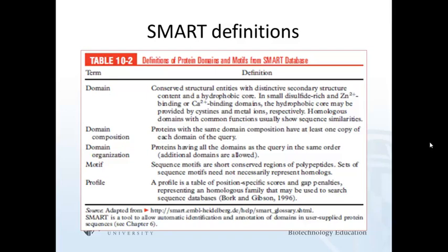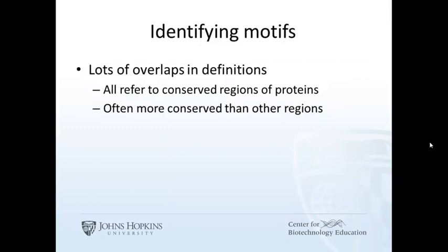Think of it this way: a helix-turn-helix motif is relatively easy to build and can be achieved with unrelated proteins. A profile is defined quantitatively. SMART uses the HAMMER program to build HMMs to represent domains or motifs. Although the definitions may not be consistent and may overlap, one thing is consistent: we are describing conserved regions of proteins — regions that are less tolerant to amino acid changes.